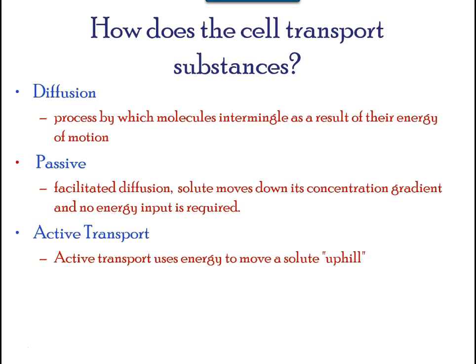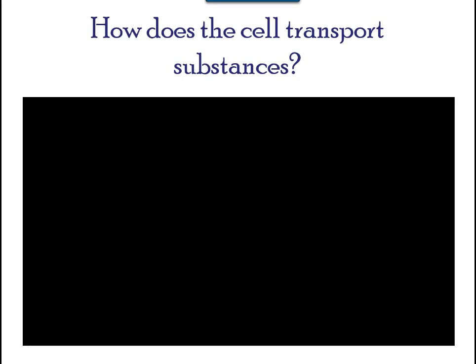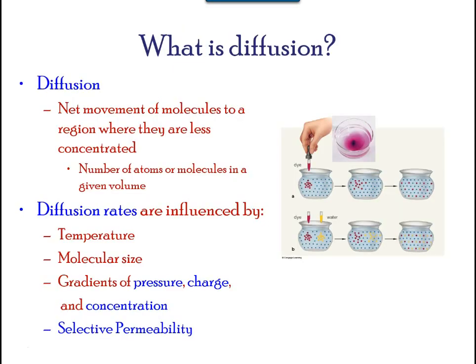A physical space in which there is a different concentration of a single substance is said to have a concentration gradient. Diffusion is a passive process of transport. A single substance tends to move from an area of high concentration to an area of low concentration until the concentration is equal across the space.